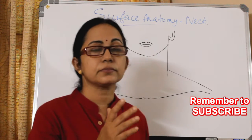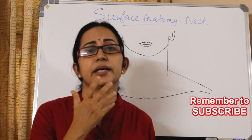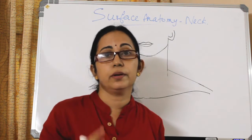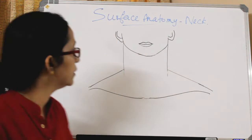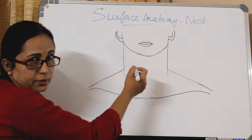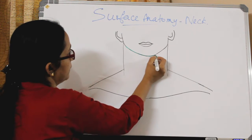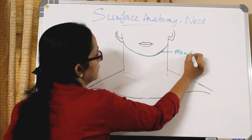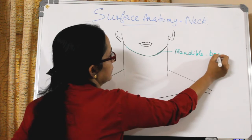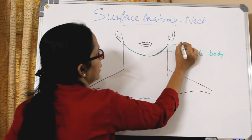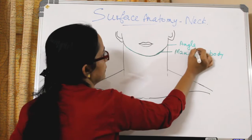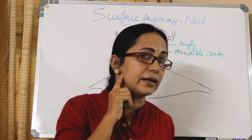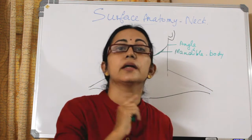I will explain from the anterior aspect first. You can palpate these structures on your own head and neck. So first comes the mandible — this is the body of mandible, and then the angle of mandible. So we have the body and the angle: two angles of the mandible and one body.